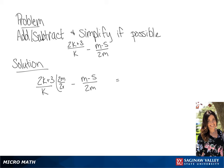So in the first part, we're going to multiply by 2m over 2m. In the second fraction, we're going to multiply by k over k,